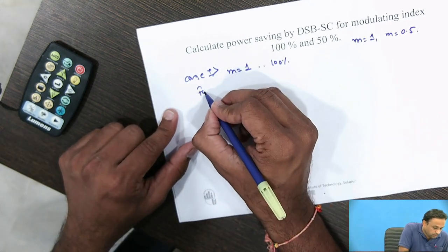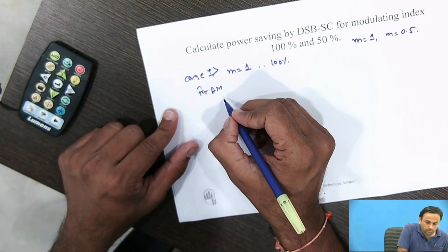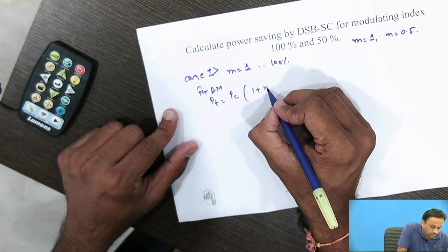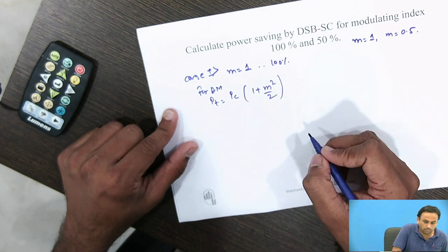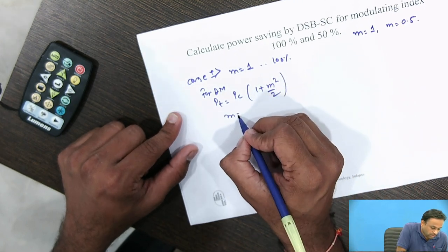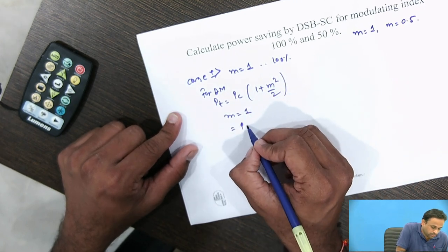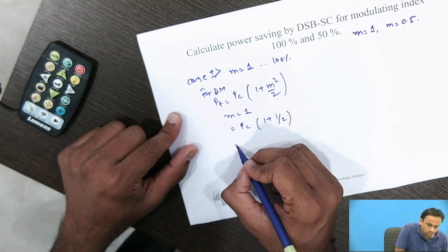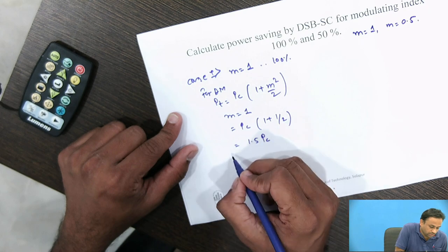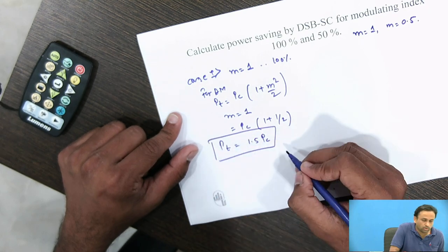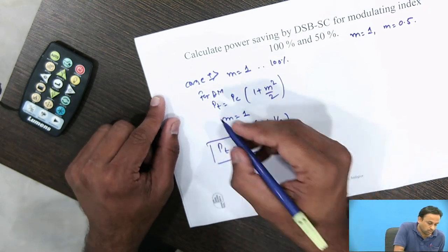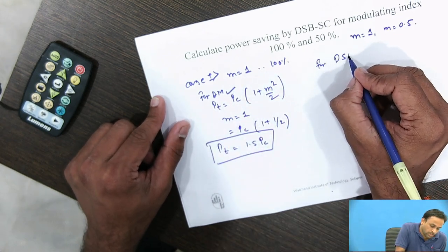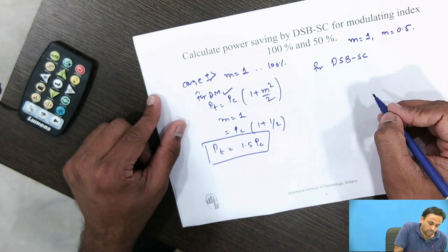For the AM wave, Pt = Pc(1 + m²/2). Substituting m = 1 gives Pc(1 + 1/2) = 1.5 Pc. So Pt = 1.5 Pc for the AM signal.